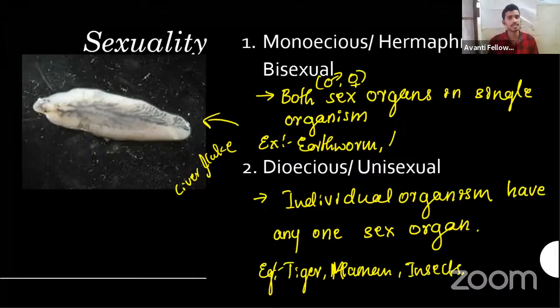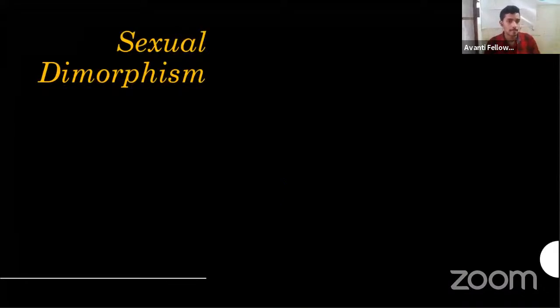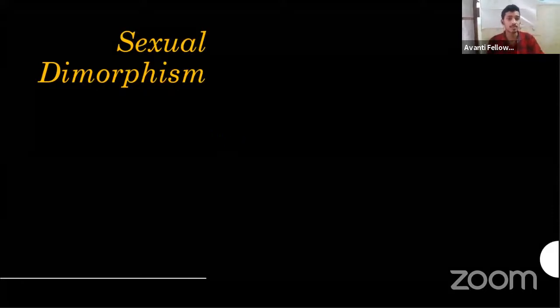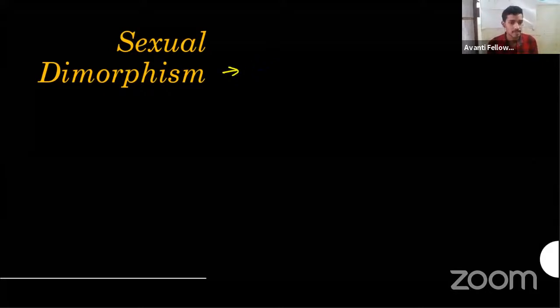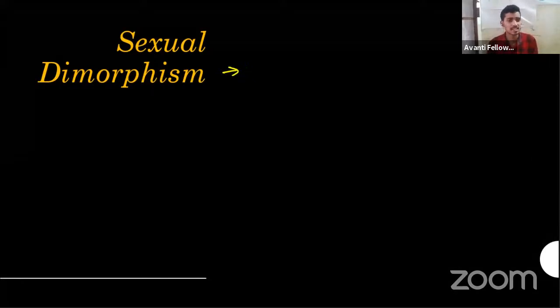The second important term is sexual dimorphism. Can anybody answer what sexual dimorphism means? Male and female are distinct in their morphology — that is correct. When you are asked a question, answer what you know, not what Google knows, so I can understand your thinking.